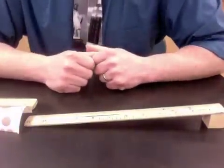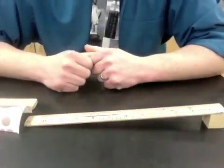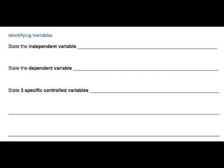You'll take an average of each of those measurements and record them in your data table. On the worksheet, you'll need to identify the independent variable, the dependent variable, and at least three controlled variables.